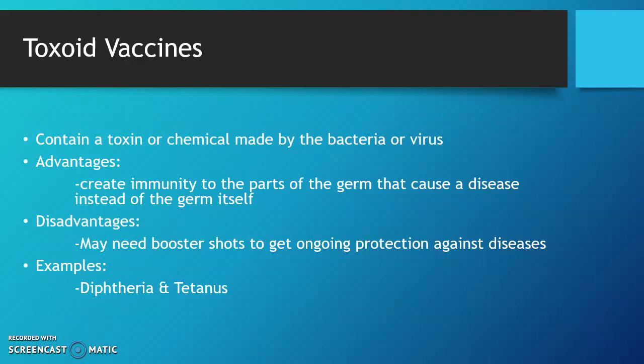Another type is toxoid vaccines. They contain a toxin or chemical made by the bacteria or virus. Advantages would be they create immunity to the parts of the germ that cause the disease instead of the germ itself. Disadvantages: they may need booster shots to keep ongoing protection against diseases. Examples would be diphtheria and tetanus shots.